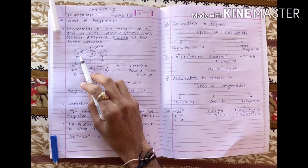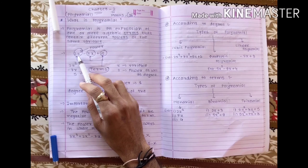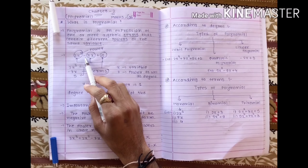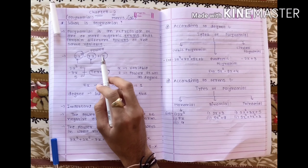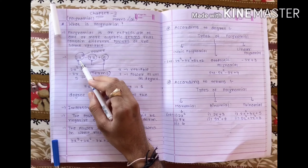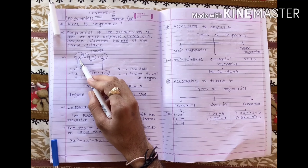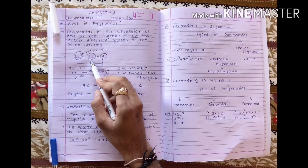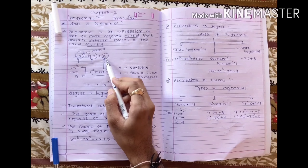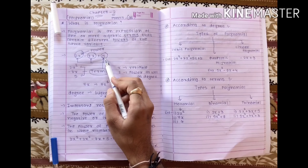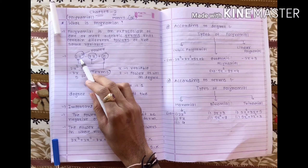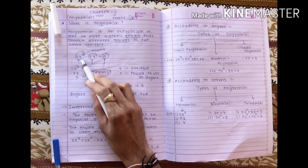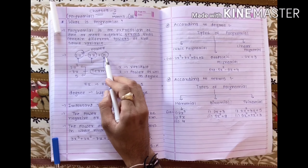See, I wrote one example: 2x² minus 7x plus 5. In this, 2x², 7x, and 5 are the terms. This polynomial has three terms.